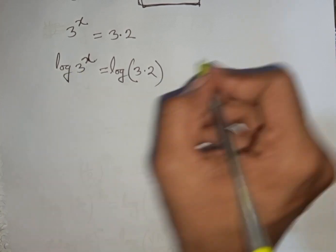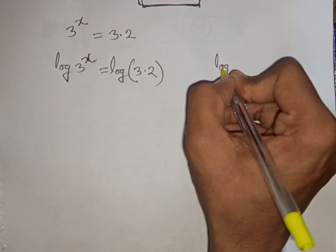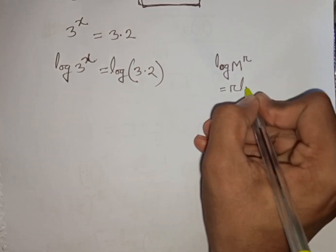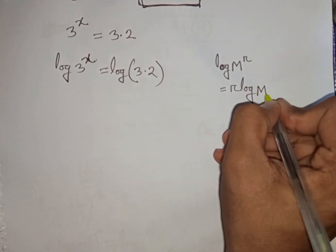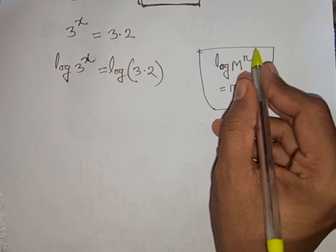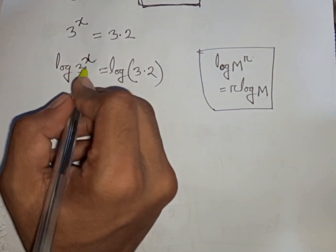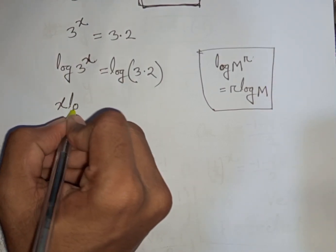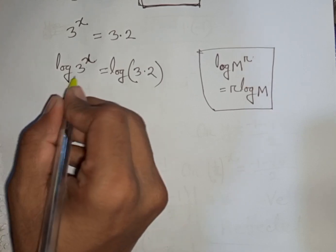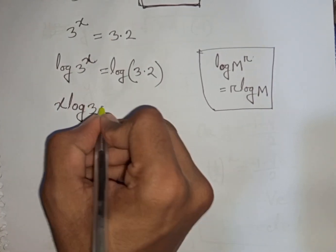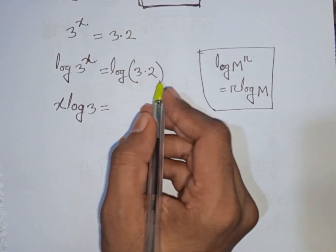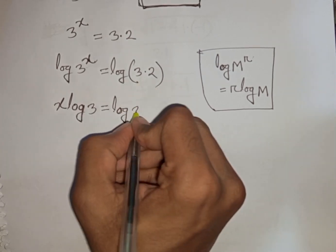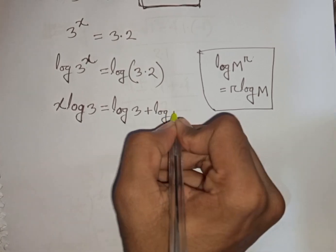We can apply the rule that log m power r is equal to r log m. That means this power r moves to the front. We can compare here — this power x will move to the front. So we can write x log 3 is equal to log of 3 times 2, which can be written as log 3 plus log 2.